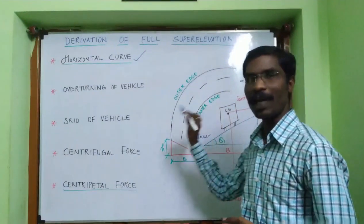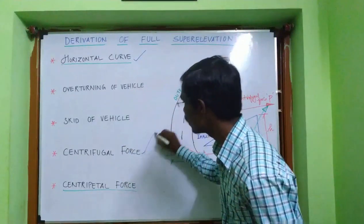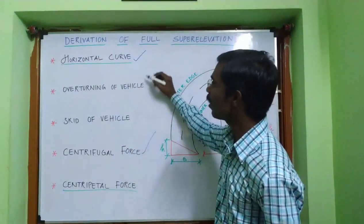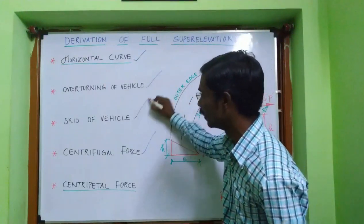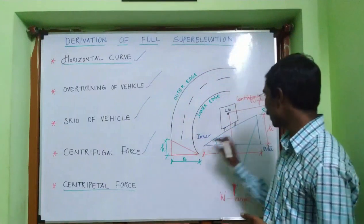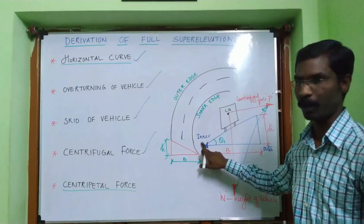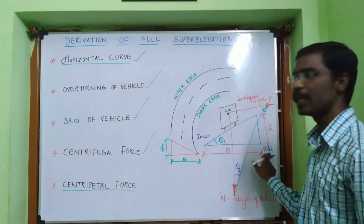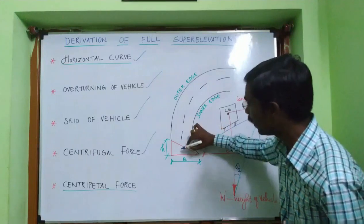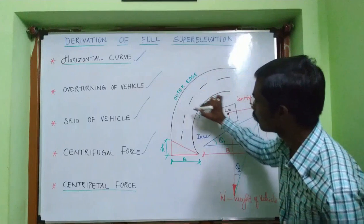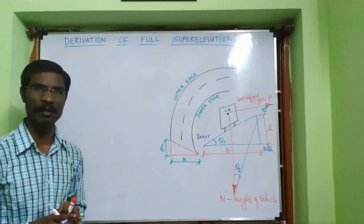Super elevation is provided in order to counteract the effect of centrifugal force, to reduce the tendency of overturning of the vehicle, and to reduce the tendency of skidding. It introduces centripetal force by increasing the outer edge of the pavement with respect to the inner edge. This transverse inclination, provided throughout the length of the horizontal curve, is called super elevation.